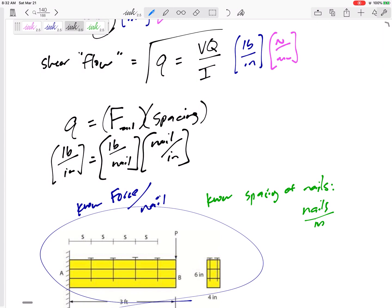So knowing that q equals VQ over I and knowing that q can equal the force per nail times the spacing of nails, then maybe we want to know the spacing. Well, if we know the q, the shear flow, and force, how strong these nails are, then I can tell you the spacing. That's generally how we would do these problems. Or if you know the spacing that you want to put them, and you know the q, then you can find, okay, what type of nail do I need if I want to put them right here? What type of nail do I need?